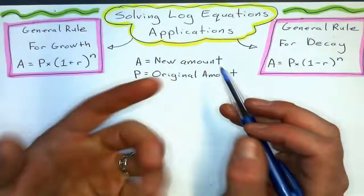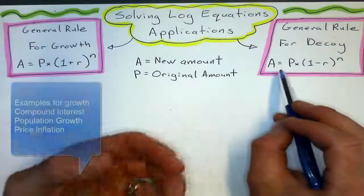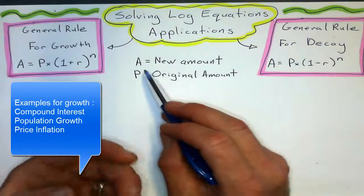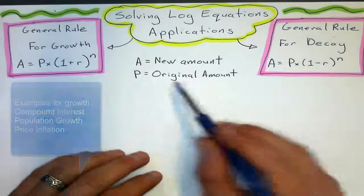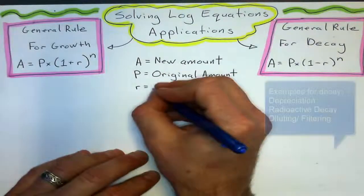Alright, so this can be money, it can be population, but whichever one was first, and I got this formula from P standing for principal when it comes to money. Principal is the amount you originally invest. A is the amount after the investment is up.